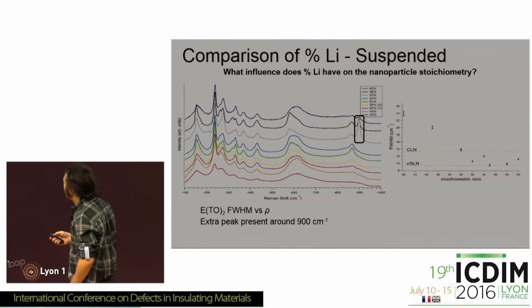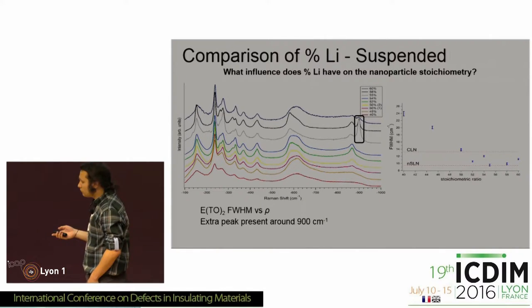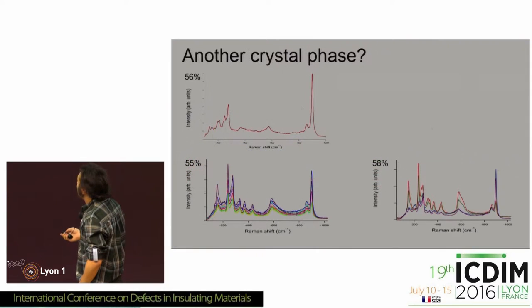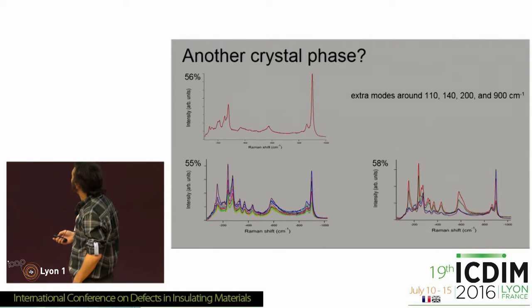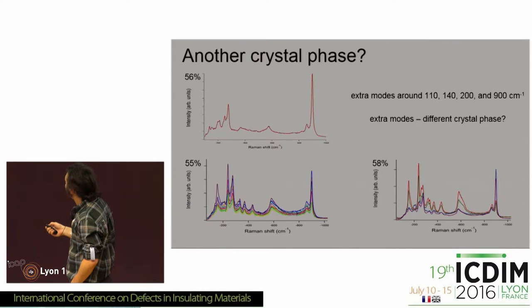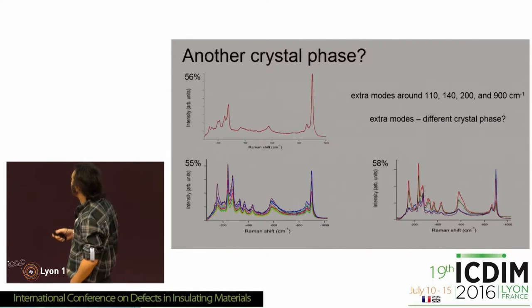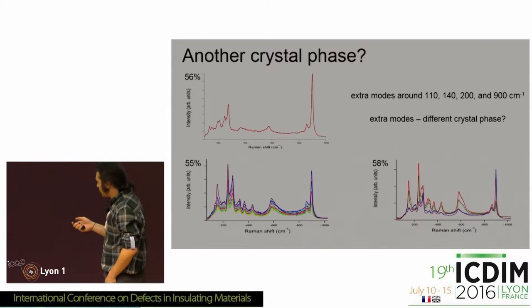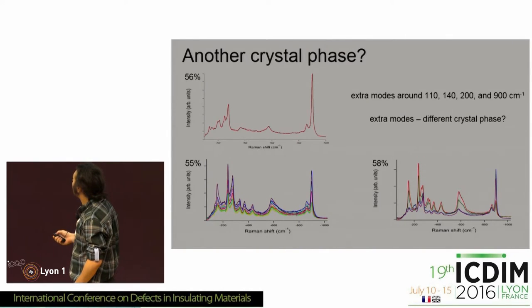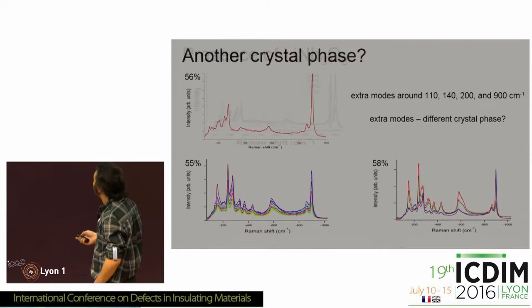Something I noticed in some of the batches were extra Raman modes that you couldn't assign to lithium niobate, which indicates the presence of another phase. There are these extra modes: one at 900 cm⁻¹, a couple at 110, 140, and 200 cm⁻¹. These are areas where you wouldn't expect any vibrational modes in lithium niobate, so it indicates there might be another phase. I only noticed these extra modes in the lithium-rich end — anything 55% and above showed this extra phase.